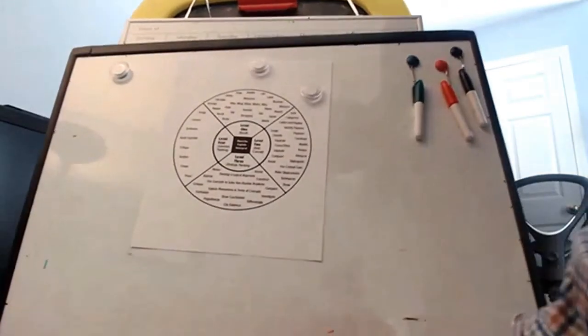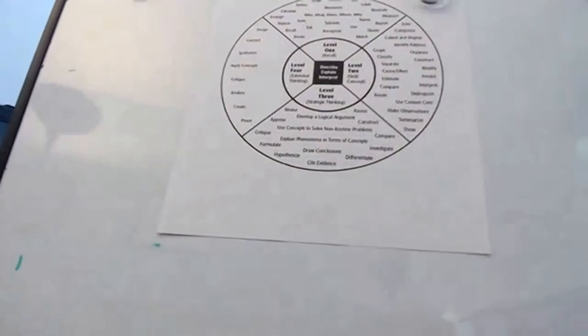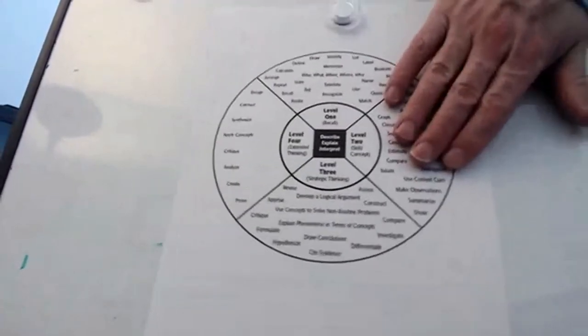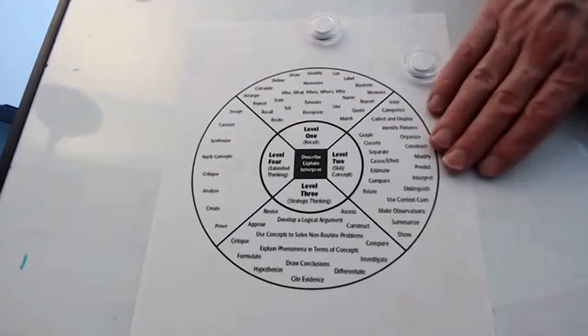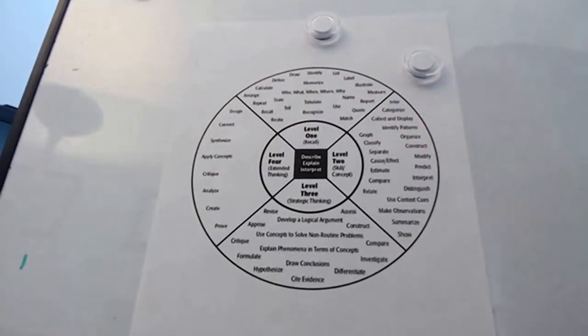Another one I like to use is Webb's Depth of Knowledge. And that's based on four levels. You have recall, then you have level two—can they do the skill? Can they actually do something with it?